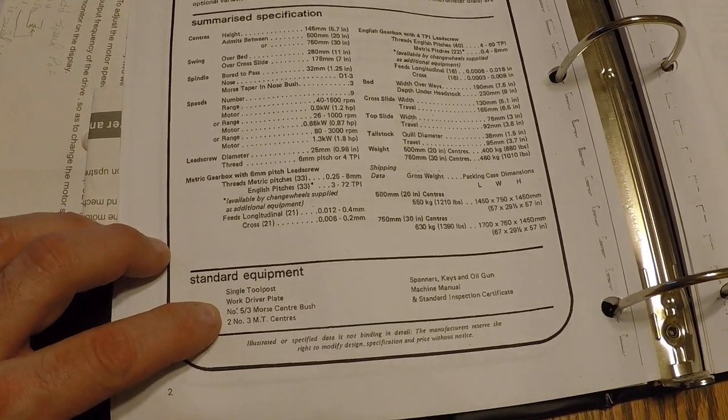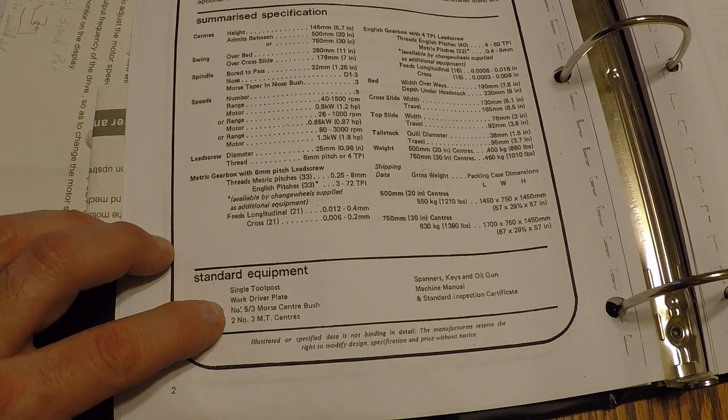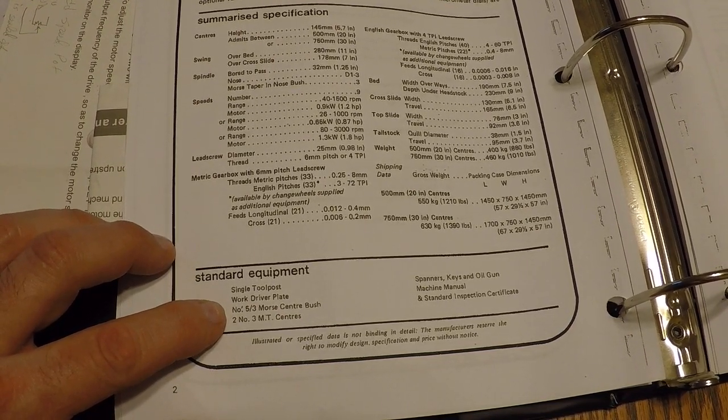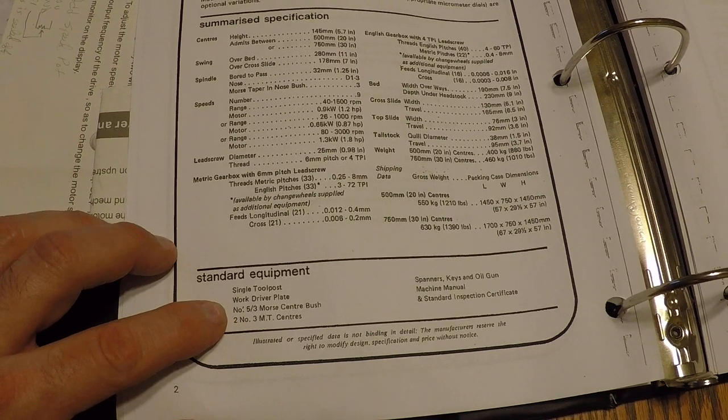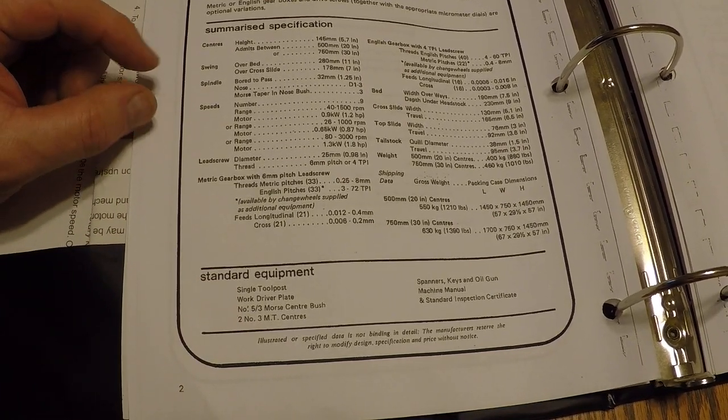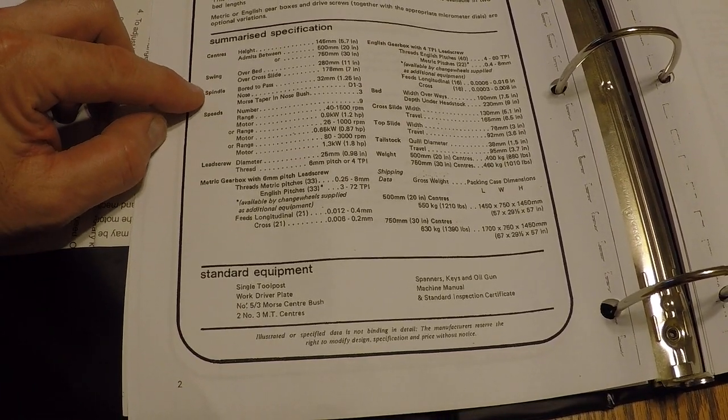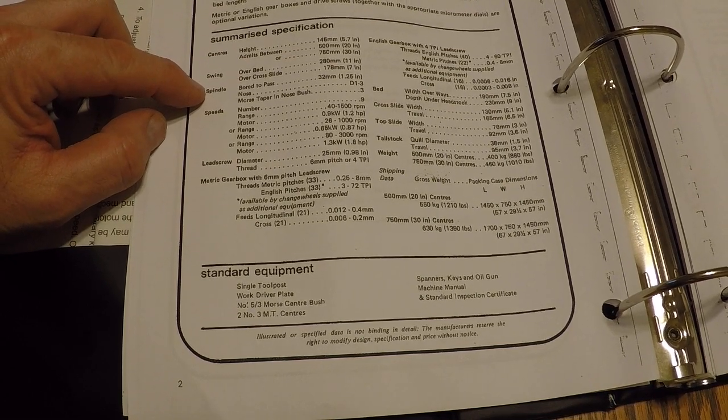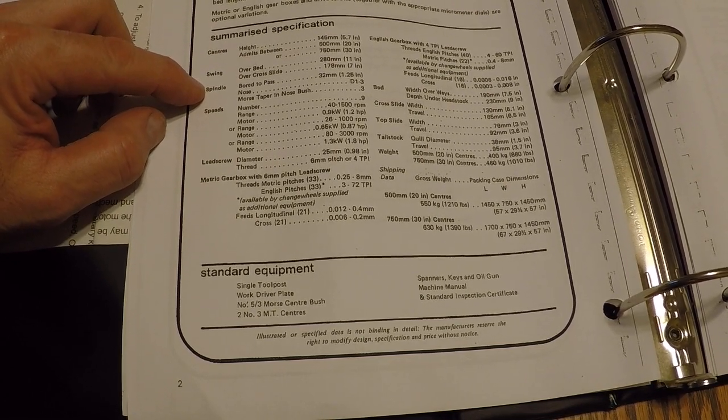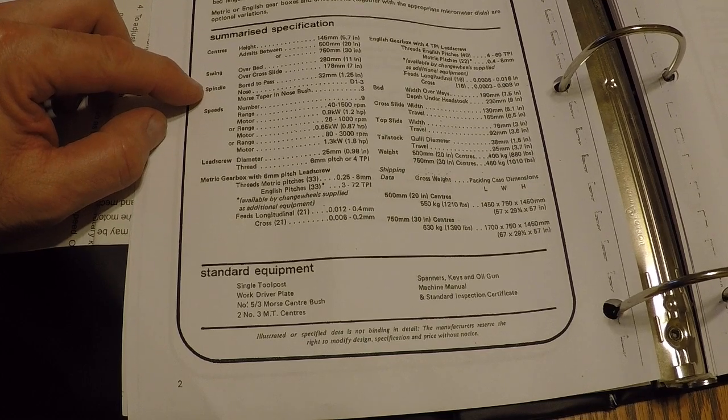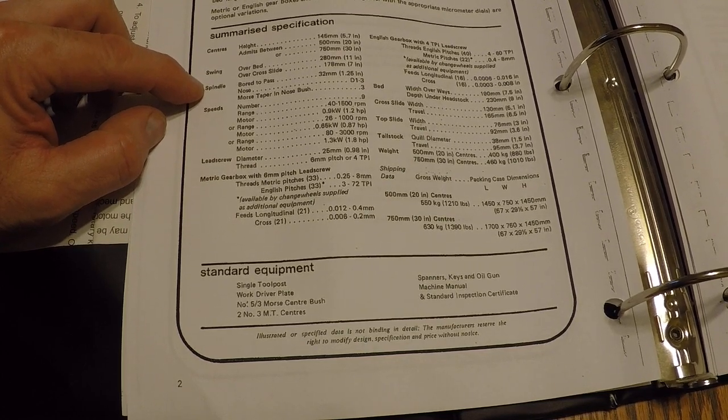But the rest of it, there's the specifications for the actual lathe. Alright. A couple of things that you might be interested in. The spindle is set up for an inch and a quarter feed through. And it's actually not too bad really for this size.